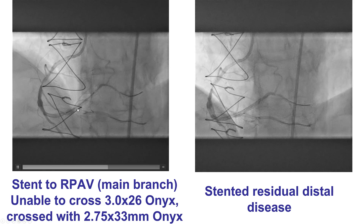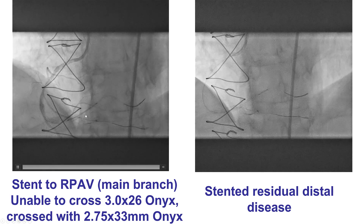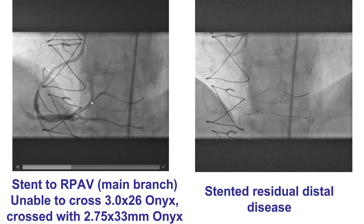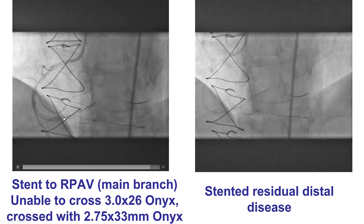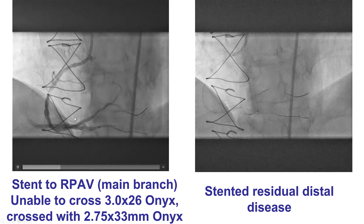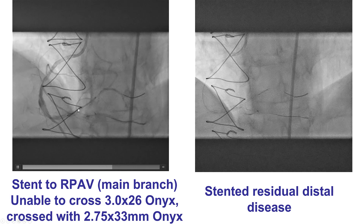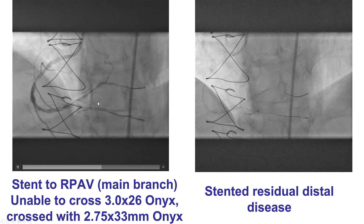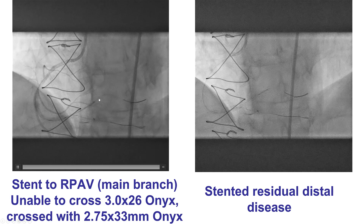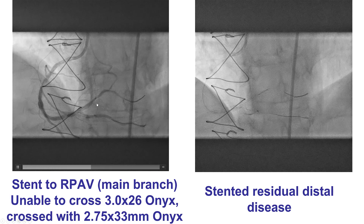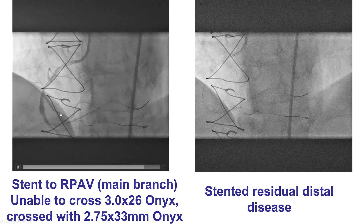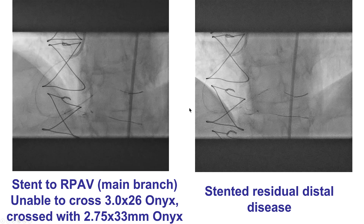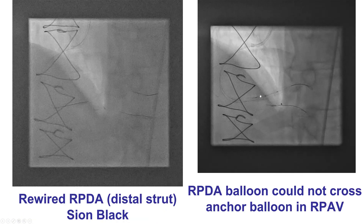After achieving a good result in the PDA, which was the side branch, the next step was to stent the main vessel. The stent protrudes at least 8 mm back from the bifurcation carina to allow for the proximal optimization technique. In this case, we did not optimally choose the stent length and had a small area of uncovered lesion distally. So we deployed the stent, and then before other steps, we placed an additional short stent covering the distal lesion into the right posterior lateral vessel.